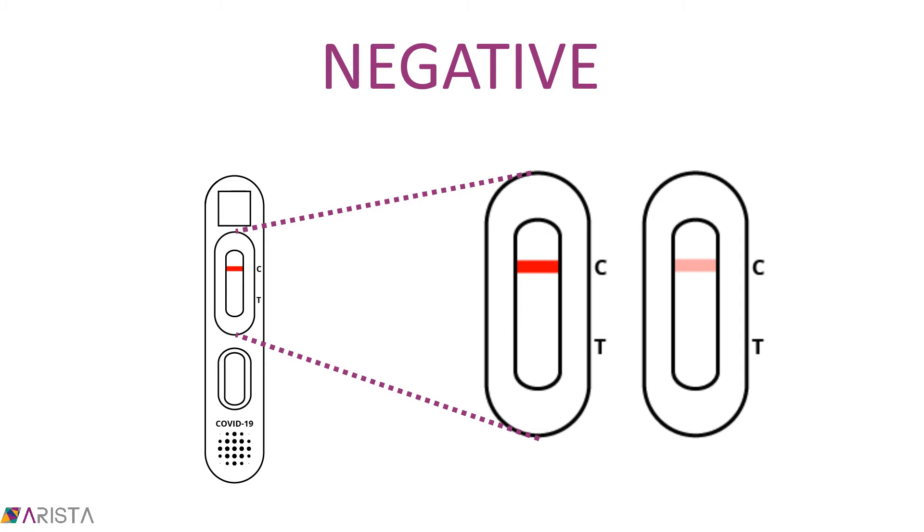If the C line displays a visible color band, even if faint, and the T line is blank, then the test result is negative and you are unlikely to have COVID-19.